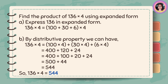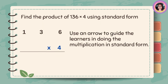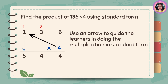So, 136 times 4 is equal to 544. Let's find the product of 136 times 4 using standard form. 4 times 6 is 24, carry 2; 4 times 3 is 12 plus 2 is 14, carry 1; 4 times 1 is 4 plus 1 is 5. So, the product is 544.